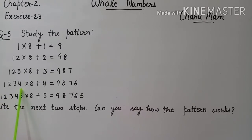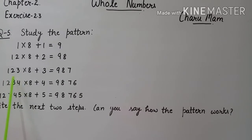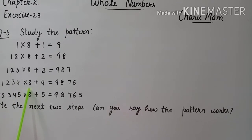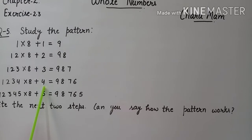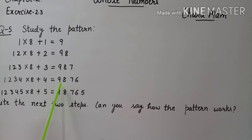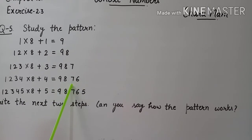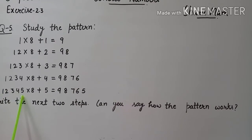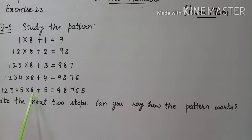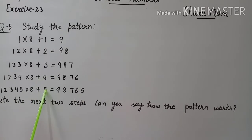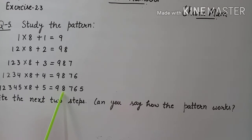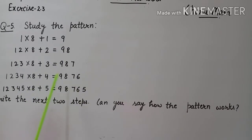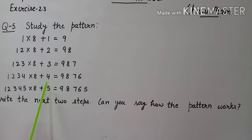अब यहाँ पर देखेंगे — ऊपर वाले step में था 1,2,3; next में 1,2,3,4 — यानि 4 increase हो गया है. Multiply 8 as it is. Plus यहाँ पर भी 4 increase हो गया है. Equal के बाद 9,8,7 — फिर 7 के बाद 6. ऐसे ही next: 1,2,3,4,5 — 5 increase हो गया है. Multiply 8 as it is. Plus 5. Equal के बाद 9,8,7,6,5. तो इसी pattern को observe करते हुए हम next two steps write करेंगे.